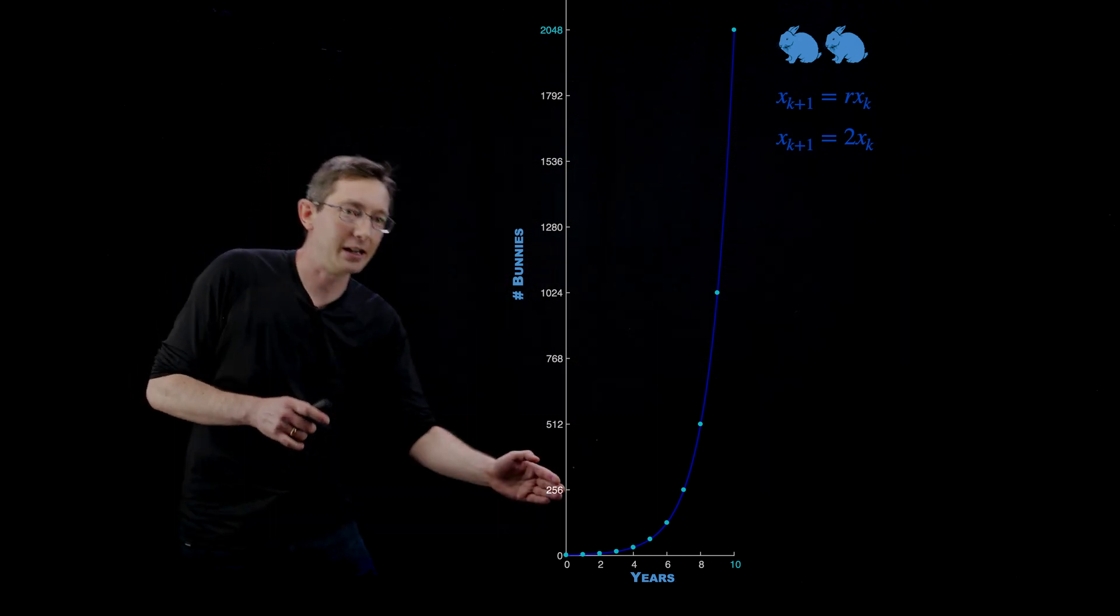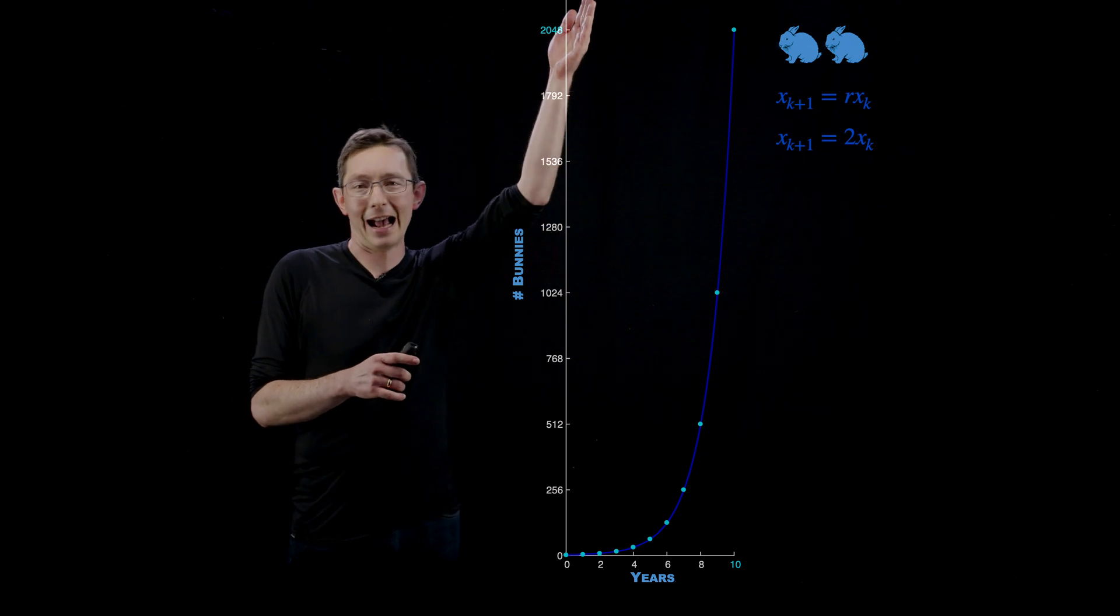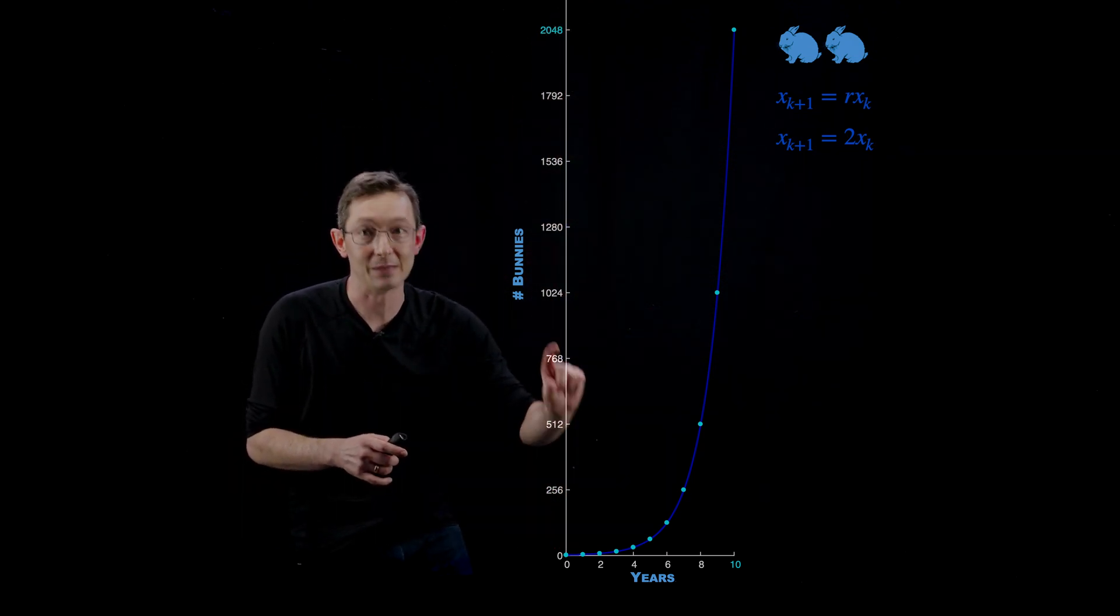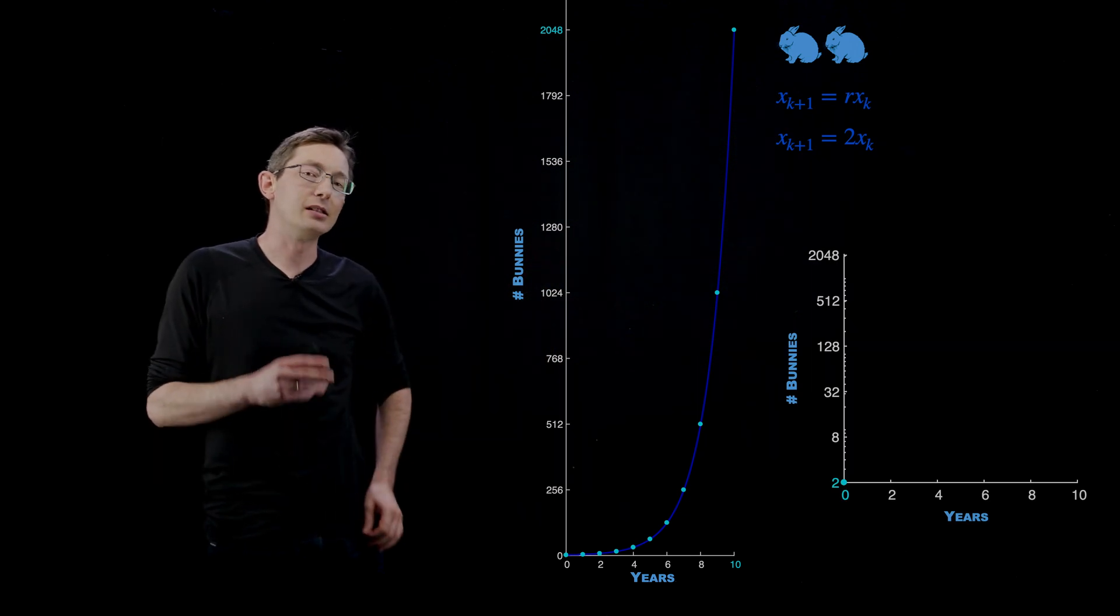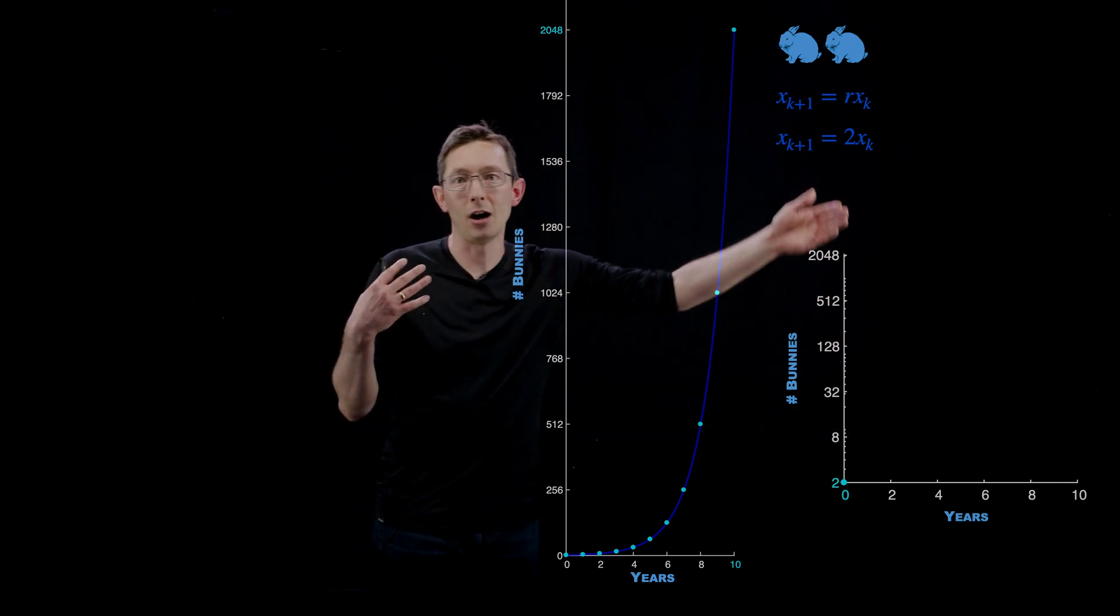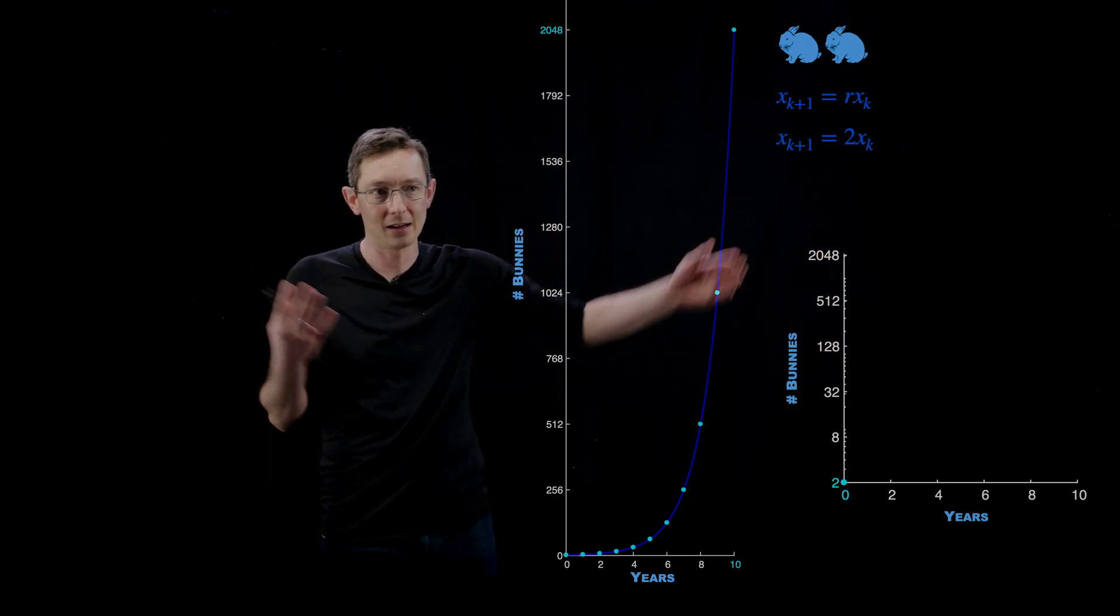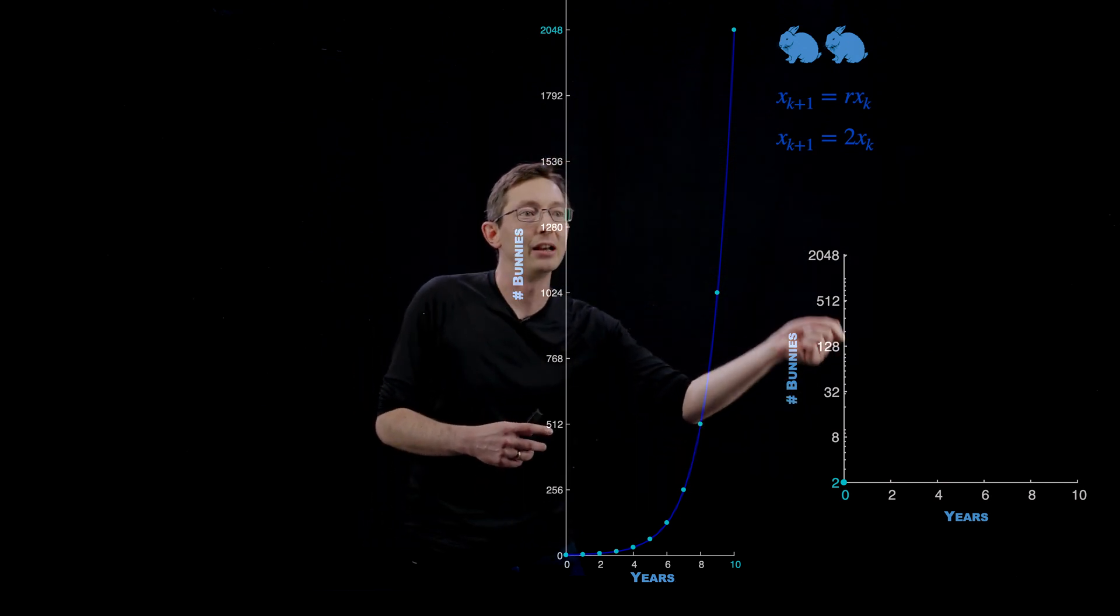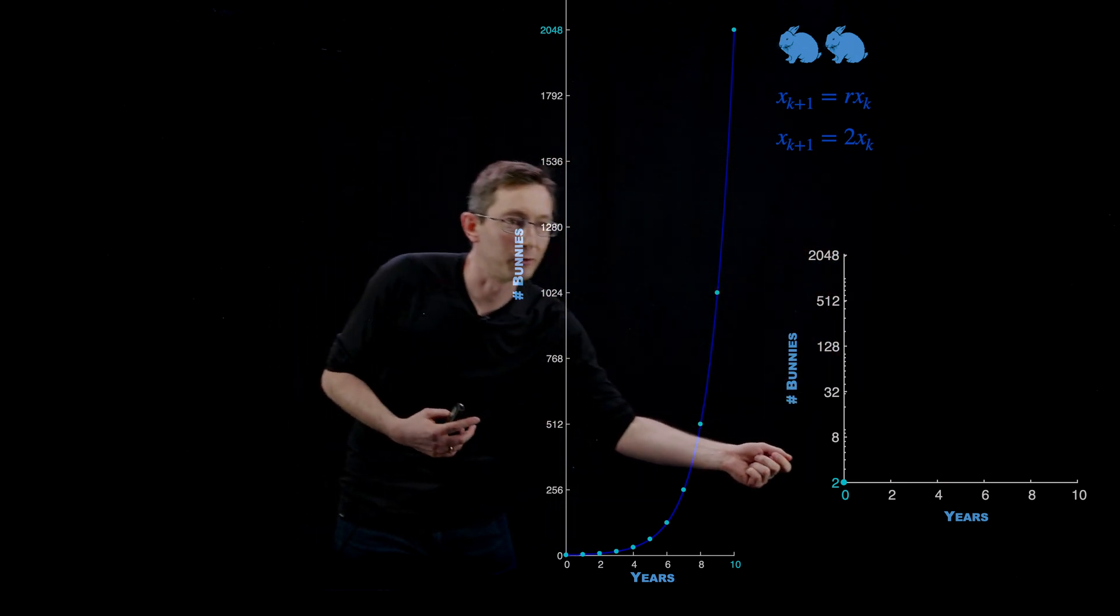And oftentimes it's useful, instead of plotting on these linear axes like what we're used to, where every tick is the same spacing, oftentimes it's useful to plot in these log coordinates. So the y-axis now is logarithmically spaced. So every tick in the y-direction, I'm actually taking a bigger and bigger step. So from 2 to 8, from 8 to 32,